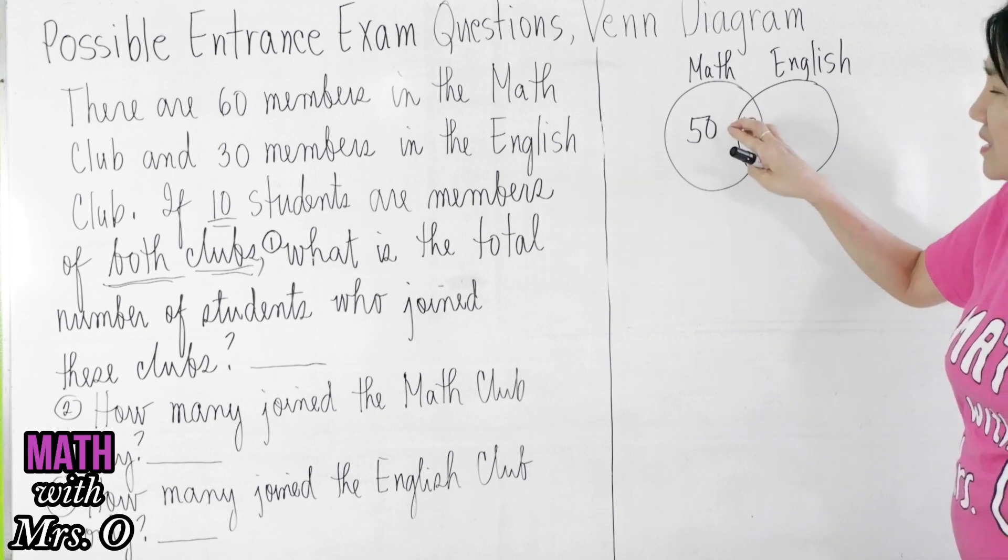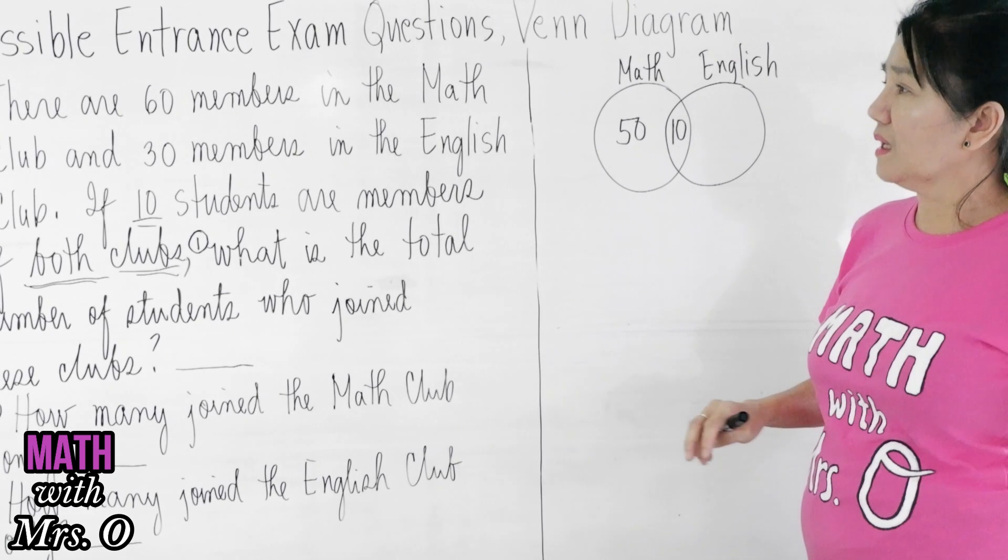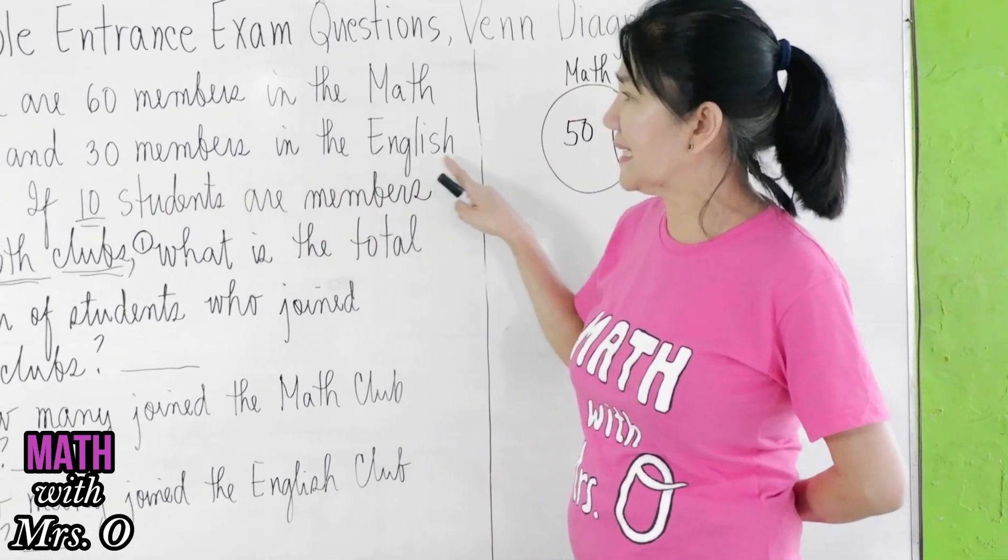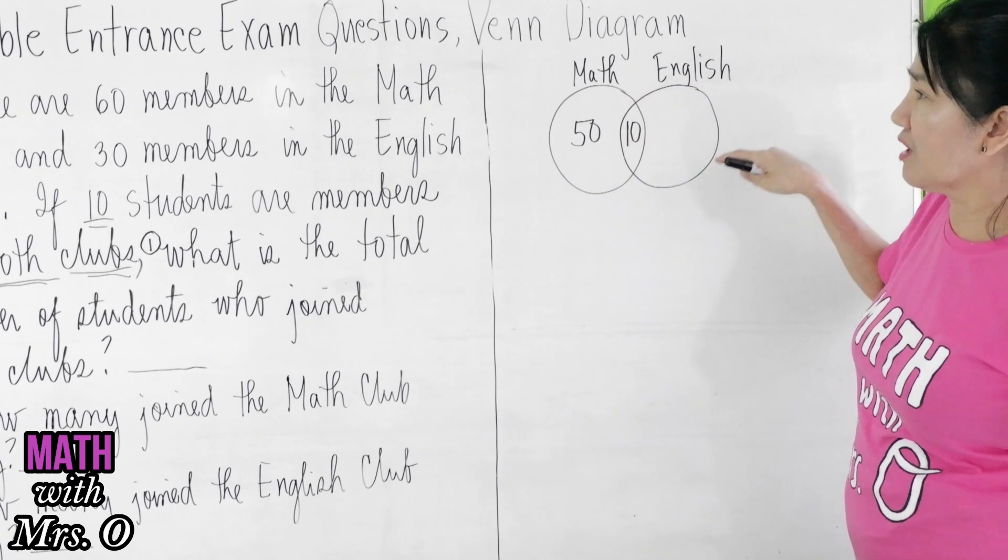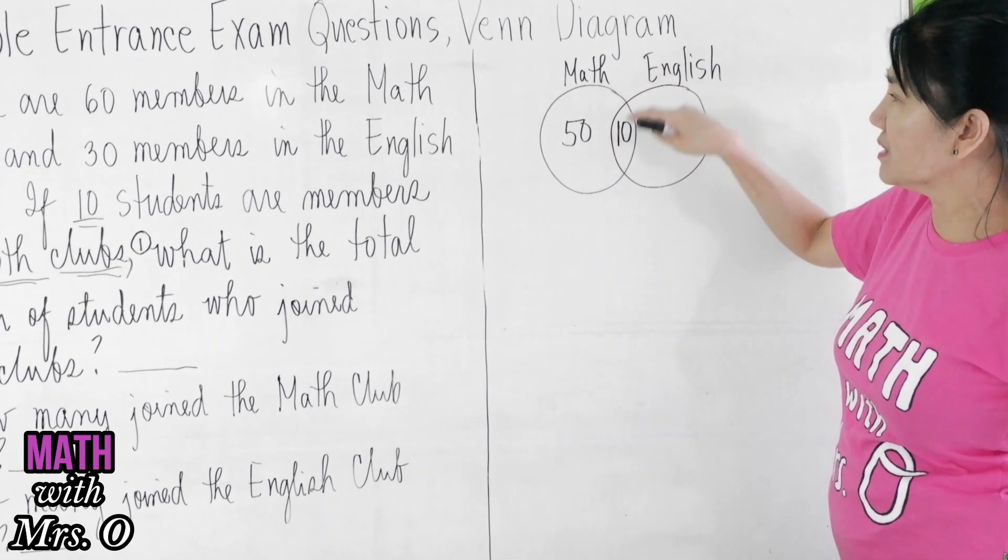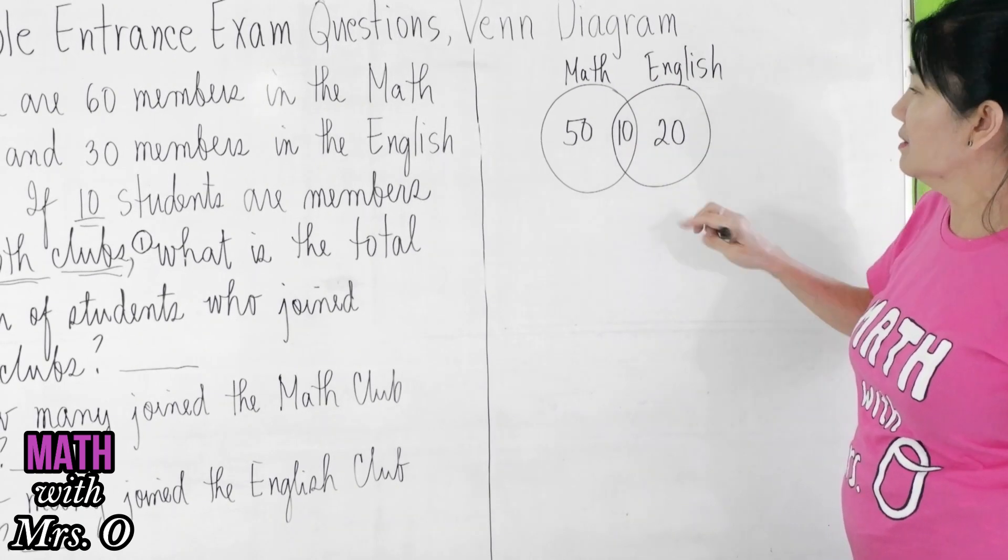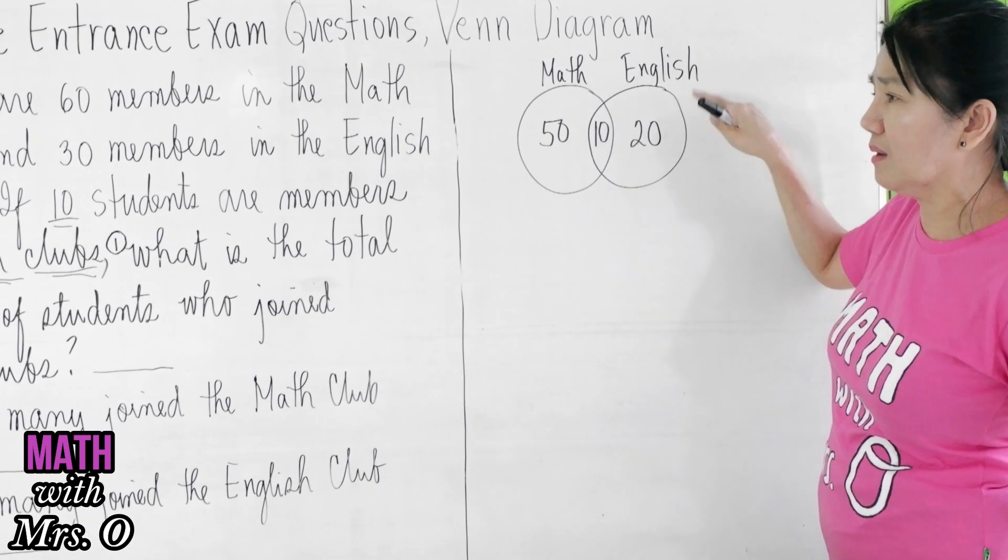50 plus 10 is 60, so there are 60 members in the math club. Now proceed: there are 30 members in the English club. This is the English club. There are 30 members, so you already have 10 here, so you should have 20 here. 20 plus 10 are members of the English club.